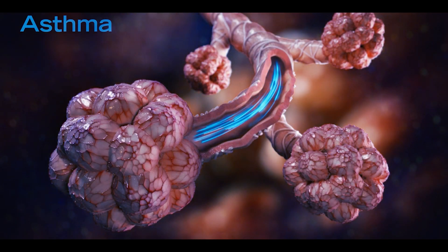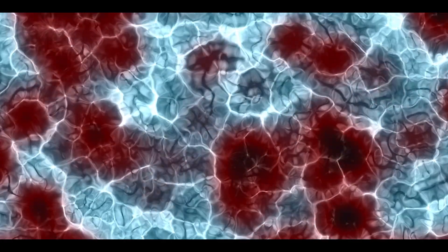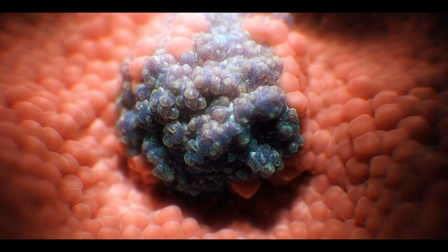As a result, bronchiole cells release chemoattractant chemicals that activate immune cells that cause inflammation in the lungs.